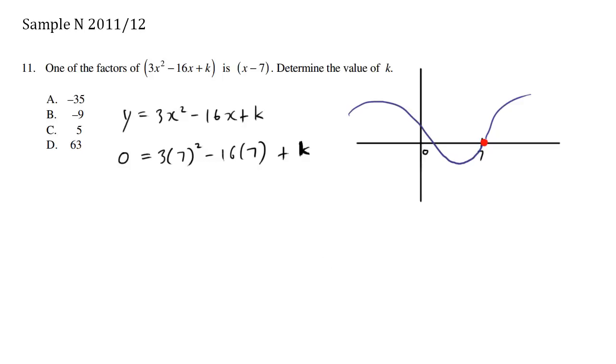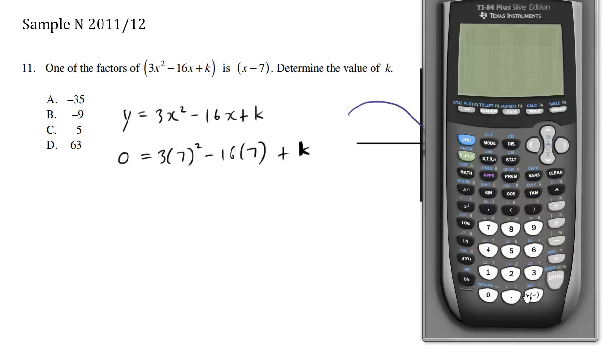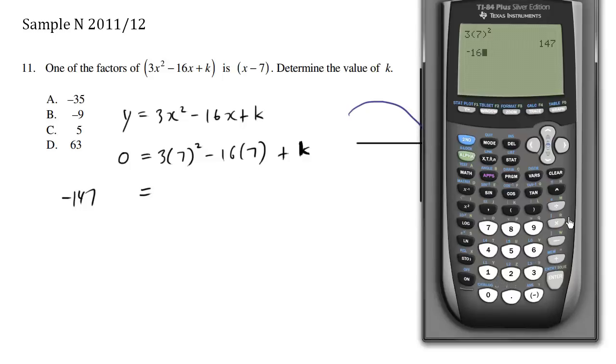Using our calculator, we have 3 times 7 squared, which is 49, equals 147. So this here is 147. I'm going to put it over the equal signs to make it negative 147. And then we have negative 16 times 7, which is negative 112. When I put it over, it's going to be positive 112 equals k.